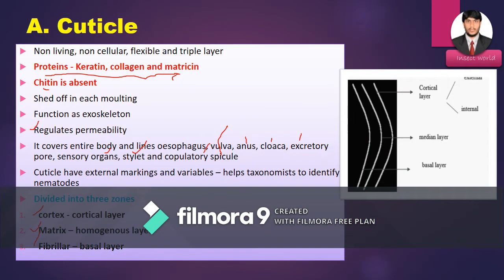The nematode cuticle is a non-living, non-cellular, flexible, and ripple layer. It is made up of proteins such as keratin, collagen, and matricin. In nematode cuticle, chitin is completely absent — even compared with insects where chitin is present. During each molting, chitin will shed.